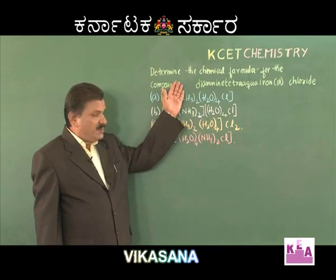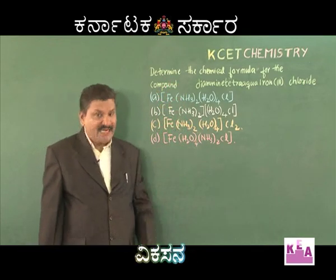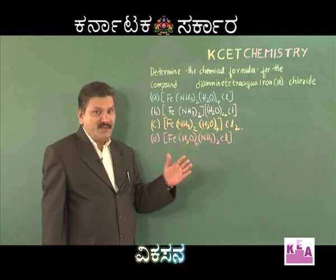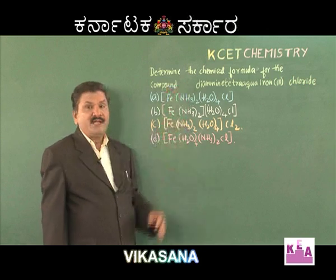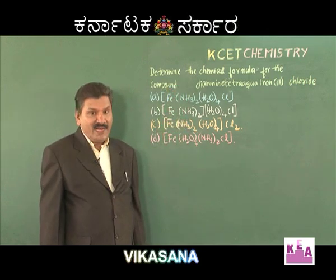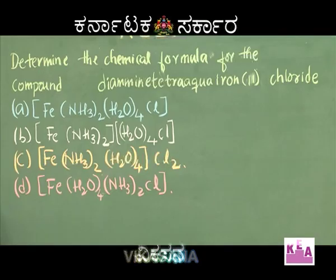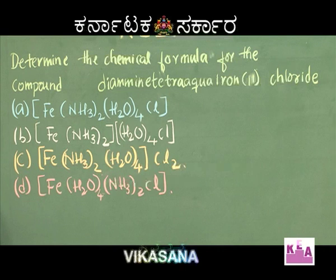In the previous questions on coordination compounds nomenclature, we were given a complex and asked to find its correct name. But in this particular question, the name of the complex is given and we need to identify the correct formula. The name given is: diamine tetraaqua iron(II) chloride.